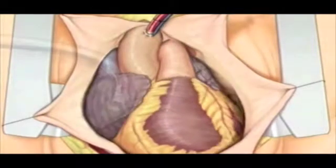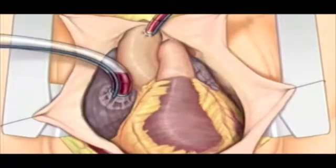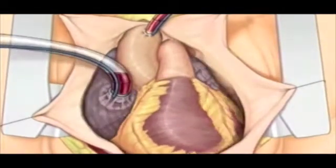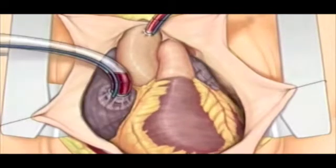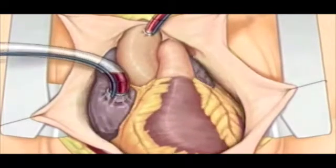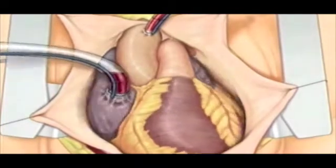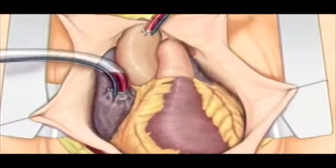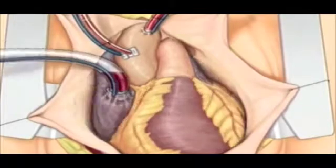Cardiopulmonary bypass mechanically circulates and oxygenates blood for the body while bypassing the heart and the lungs. It uses a heart and lung machine to maintain perfusion to other body organs and tissues while the surgeon works in a bloodless surgical field.